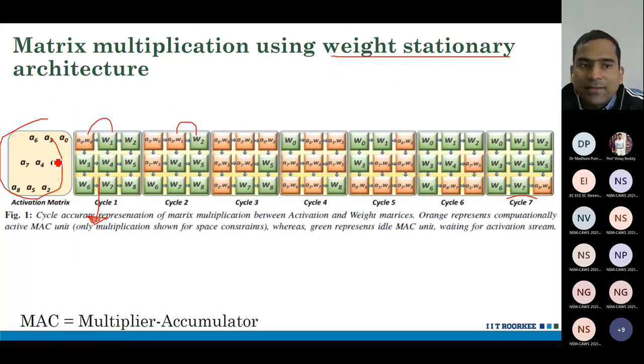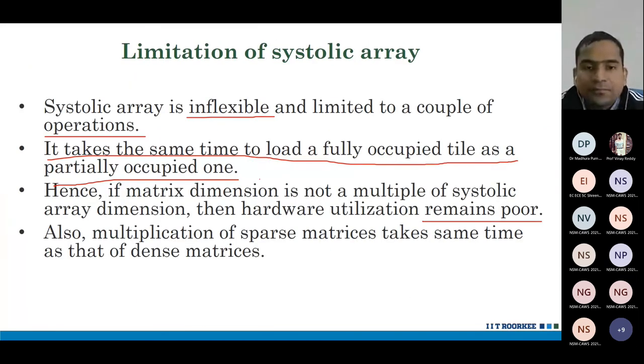For example, your hardware is 3x3, but your matrices that you are multiplying is 2x2, then some of the hardware remains unutilized. Also, multiplication of sparse matrices takes same time as that of dense matrices.